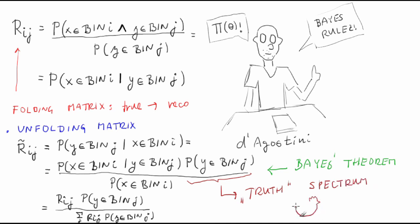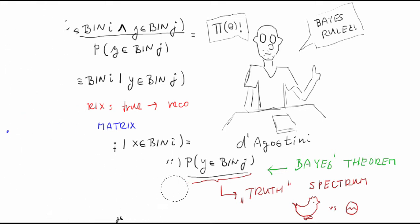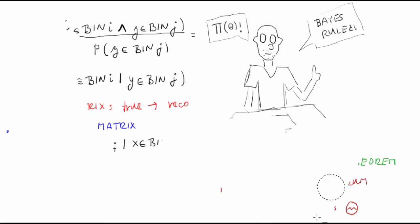So we need the truth spectrum to get the unfolding matrix, which is our means to estimate the truth spectrum. This sounds like bringing us to the realm of Bayesian statistics, and it's calling for iterations.